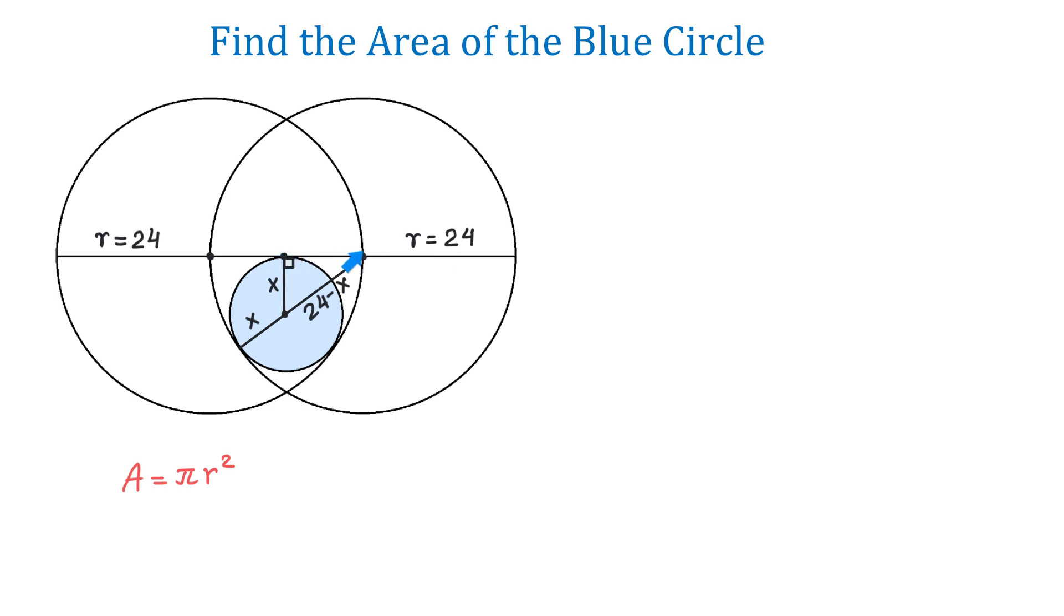This side is 12, because it is half of the radius of the large circle. And the hypotenuse is 24 minus x. Then, we can use the Pythagorean theorem to write the following equation: x squared plus 12 squared equals 24 minus x squared.